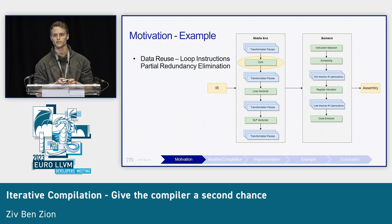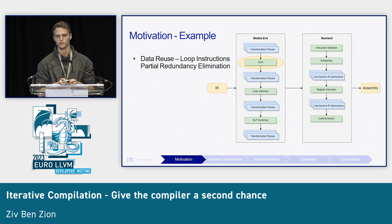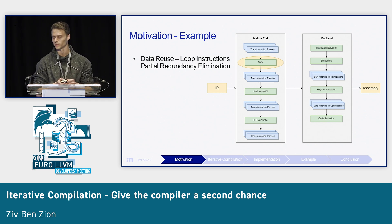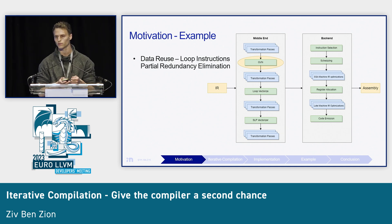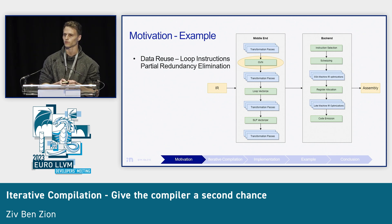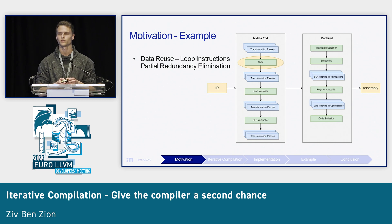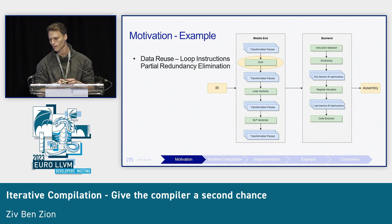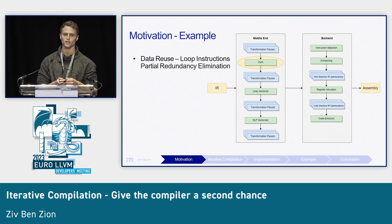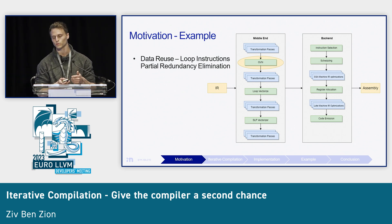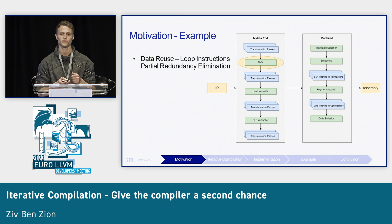The first example is the GVN pass. This pass has an optimization called loop instructions partial redundancy elimination, or simply loop data reuse. What it does is recognize that a value is recalculated multiple times across consecutive iterations in a loop, and instead reuses the value calculated in the first iteration. Generally this is a good optimization, but it also adds complexity to the loop vectorizer — sometimes to the point where the loop cannot be vectorized anymore.